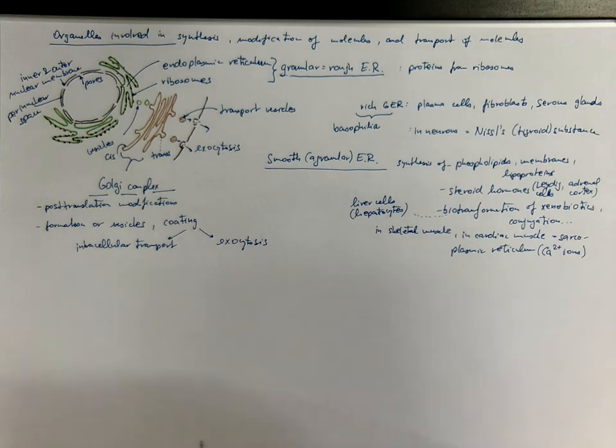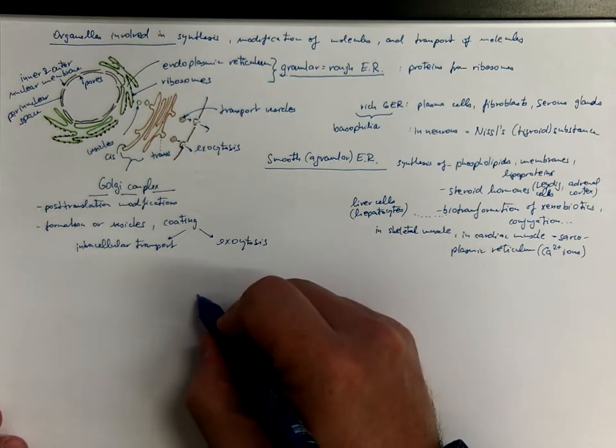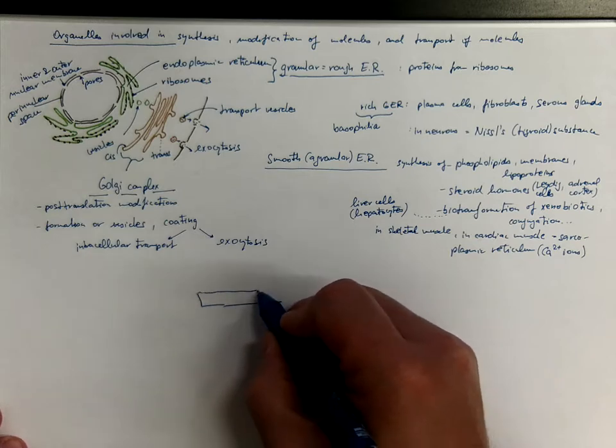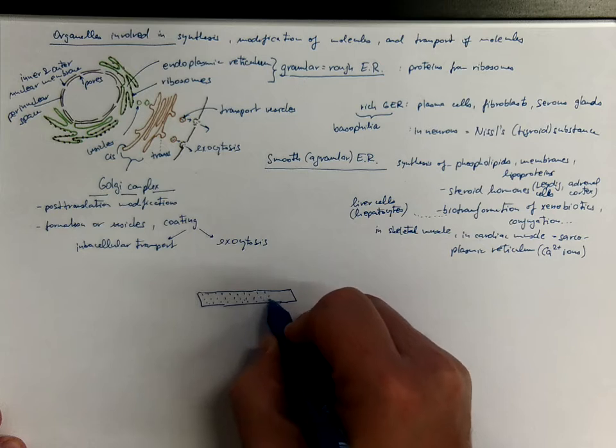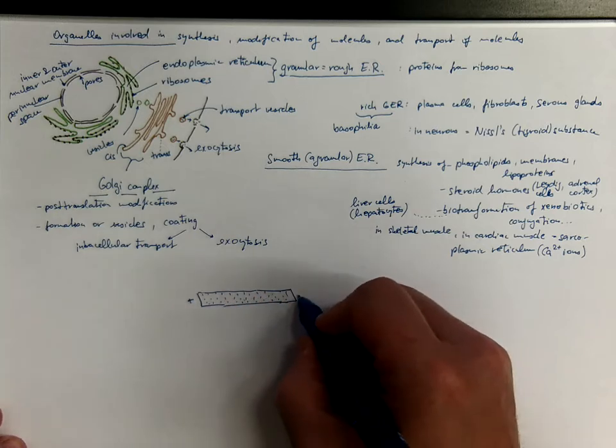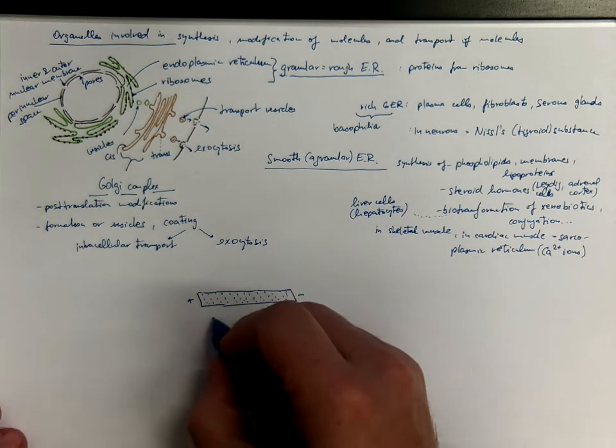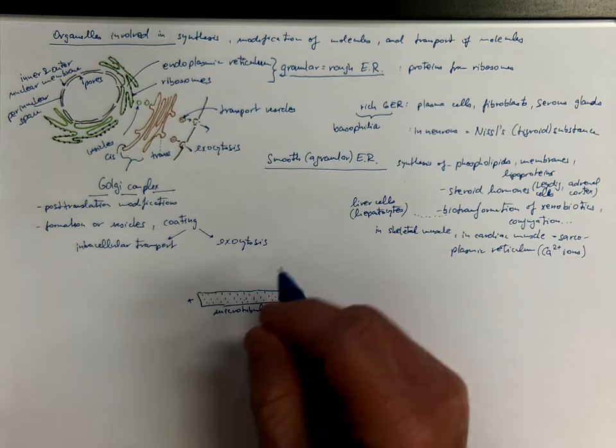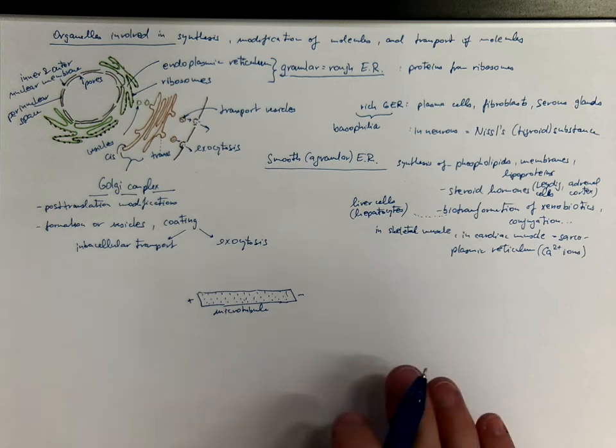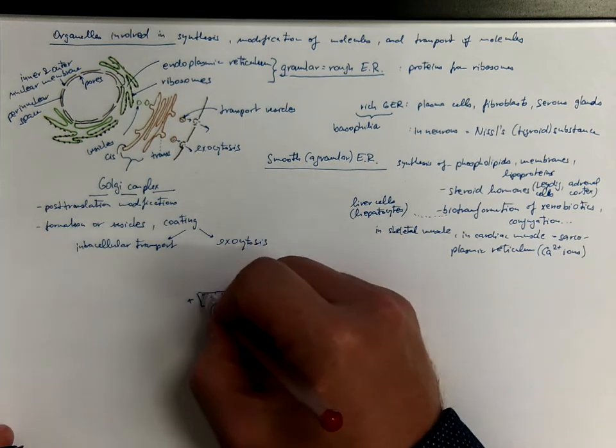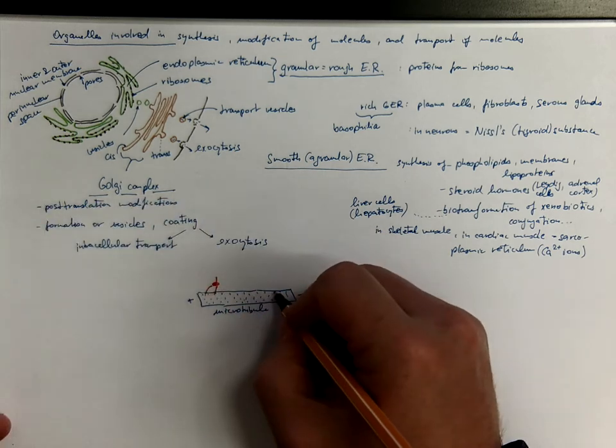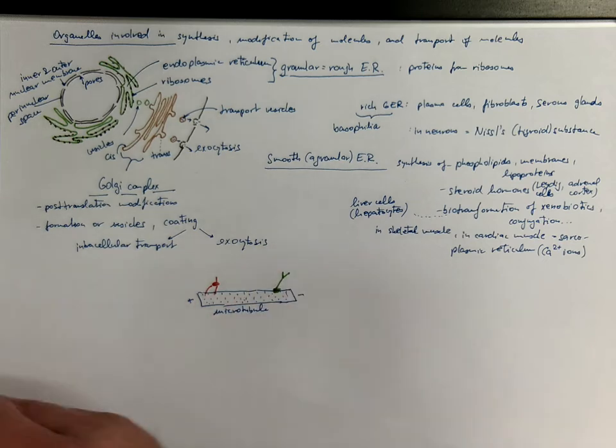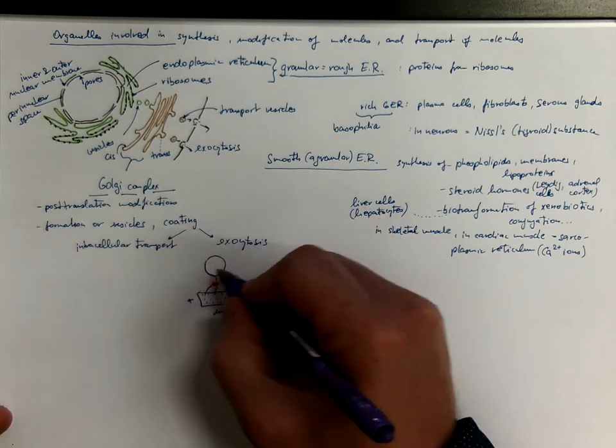The secretory vesicles are transferred using cytoskeleton for transfer. One of the examples could be microtubules. Microtubules are rigid components of cytoskeleton made of polymerized units of tubulin. They have a plus end where they can grow and a minus end where they depolymerize. And in cells they are used like railroads for transport. And we got molecular motors responsible for the transport such as dynein or kinesin that are transporting the vesicles to their addresses.